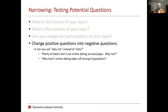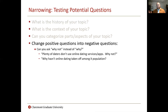One useful thing to do is to change positive questions into negative questions. It seems like a rhetorical trick, but it's actually pretty useful. Instead of asking why all the time, ask why not? Plenty of daters don't use online dating services — why is that? Why hasn't online dating taken off among a certain population? This is a useful way to really test a lot of the assumptions that are going into your question-making.